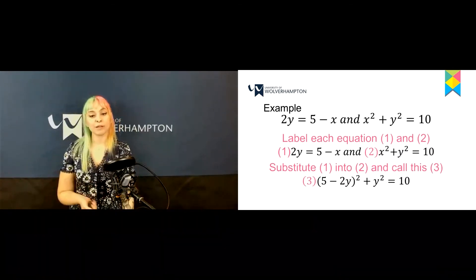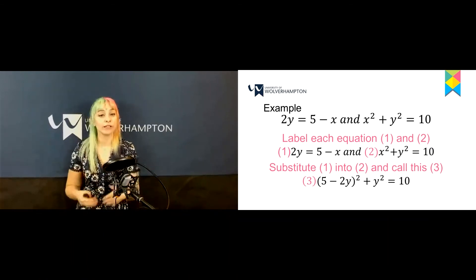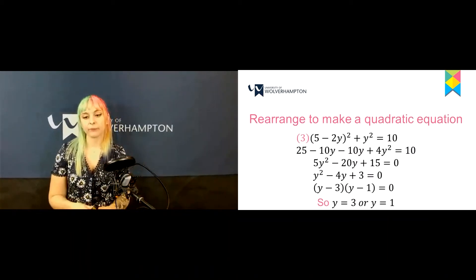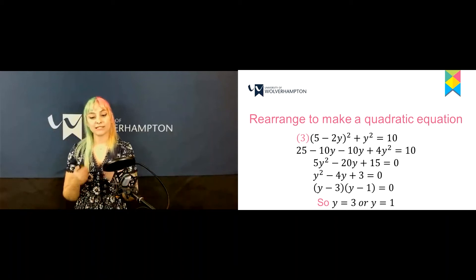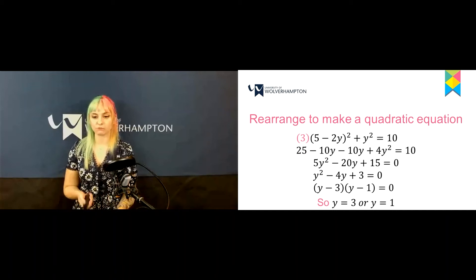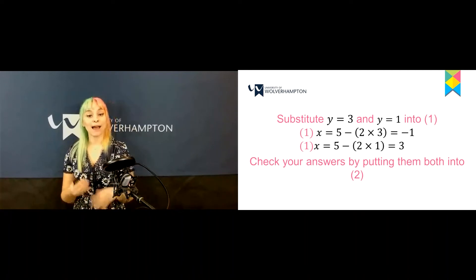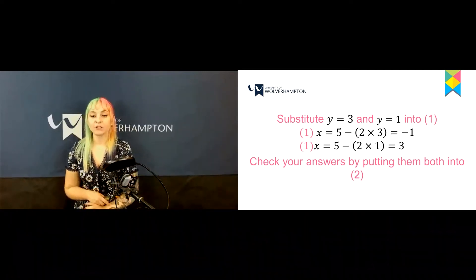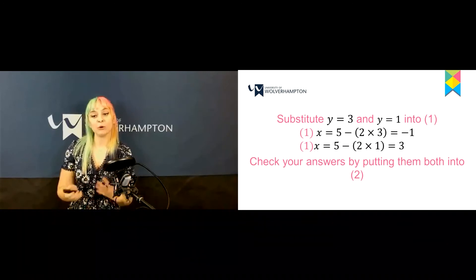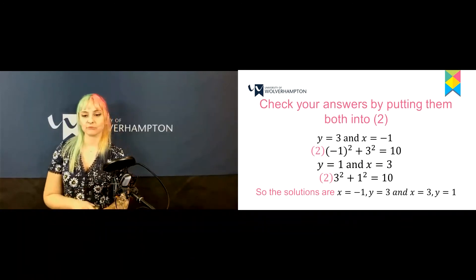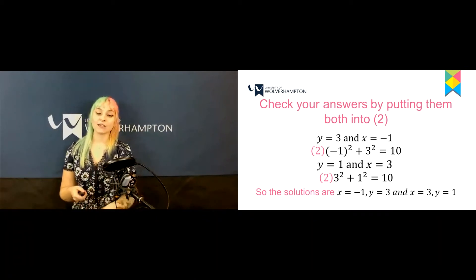Looking at the example, label each equation 1 and 2, substitute equation 1 into equation 2 to create equation 3. Rearrange equation 3 into a quadratic equation, giving y equals 3 or y equals 1. Substitute y equals 3 and y equals 1 back into equation 1 to find x equals minus 1 or x equals 3. Check by substituting back into equation 2. The solutions are x equals minus 1 and y equals 3, or x equals 3 and y equals 1.